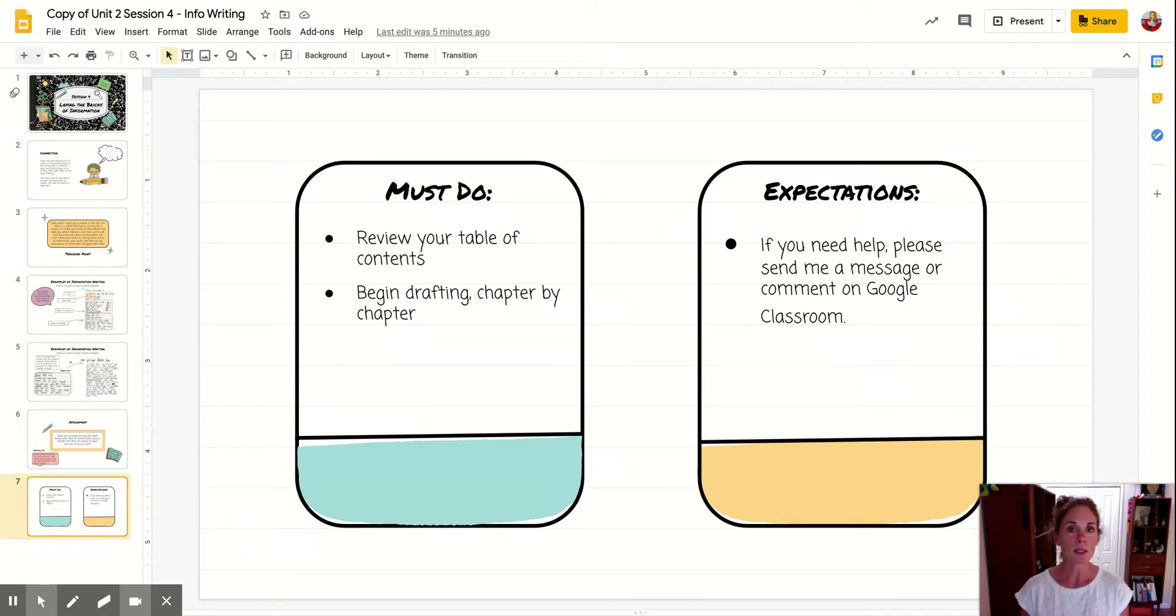So today review your table of contents and begin drafting chapter by chapter. Remember, this work should be entered into your writer's notebook. So regardless of whether you're doing it by hand or you're typing it into your writer's notebook, the information should be in your writer's notebook. And it probably will be version one, draft one. So I cannot wait to see what you do with this.